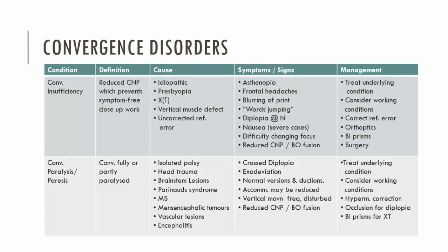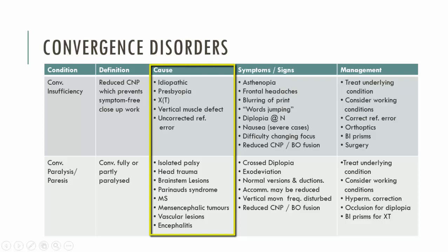Moving on to convergence disorders related to deficient convergence — we have convergence insufficiency and convergence paralysis and paresis. You've studied convergence insufficiency in more detail, so it won't be covered here. However, it's important to note that it is different from convergence paralysis and paresis, because with paralysis or paresis there is an innervational issue. It's not simply a reduction in convergence, and the causes of paralysis are far more sinister and severe than those of convergence insufficiency.